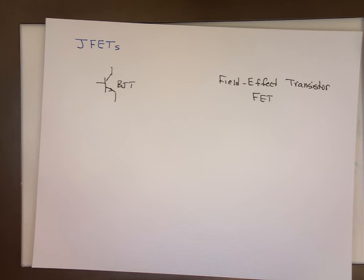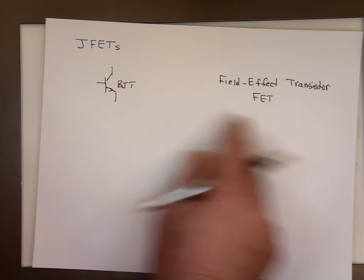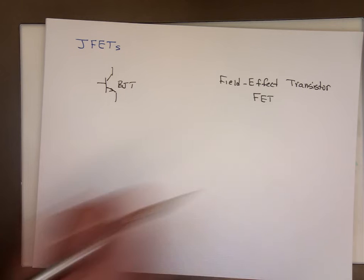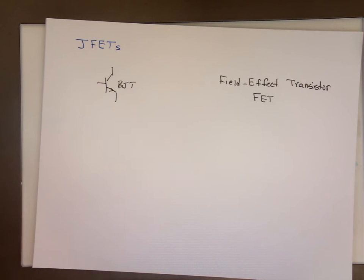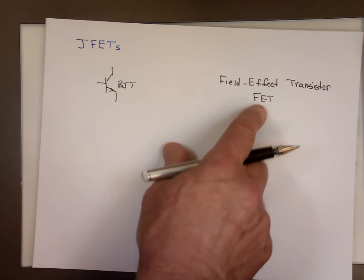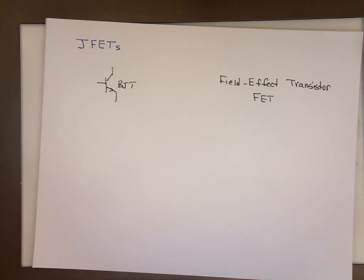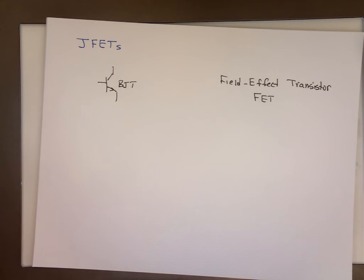Where? In any place that requires high input impedance. If you want the equivalent input value Z to be large, this is a better choice. Also, the FET is preferred for fast switching applications. Why? Because you only have one charge there, and they can actually switch much faster than the BJT.